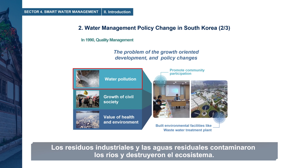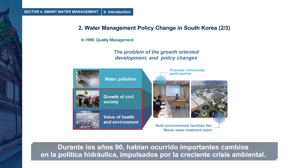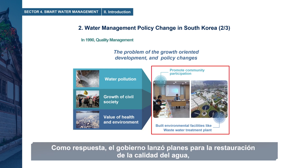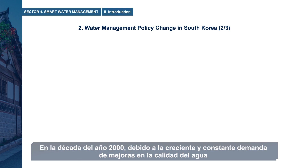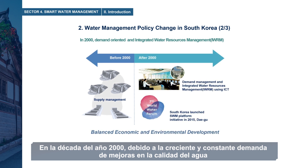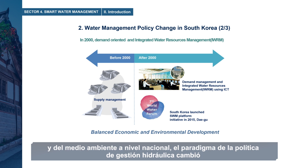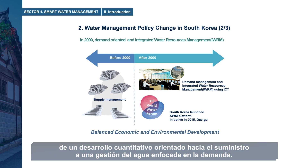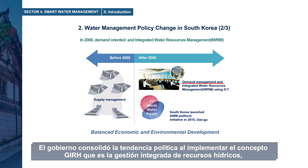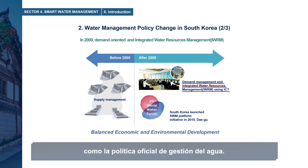Industrial waste and sewage polluted rivers and destroyed the ecosystem. During the 1990s, important changes in water policy took place driven by increasing environmental crises. In response, the government launched plans for water quality restoration, including the establishment of wastewater treatment plants. In the 2000s, due to ever-increasing national demand for improved water quality and environment, the paradigm of water management policy shifted from supply-oriented quantitative development to demand-oriented water management. The government strengthened this policy trend by implementing the concept of IWRM — Integrated Water Resources Management — as the official water management policy.